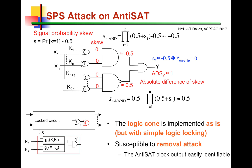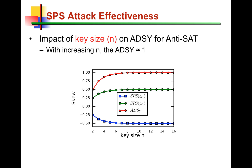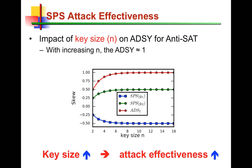Those remaining locking mechanisms can be broken by SAT attacks or sensitization attacks. So after removing the anti-SAT block, a SAT attack or sensitization attack may be launched on the remaining circuit, and the remaining locking mechanism can also be broken — that's how the anti-SAT defense is broken. We also observe that as the key size increases, as long as we have a very small or very large onset, the absolute difference between the two oppositely skewed signals will further increase, making it easier to identify the output of the anti-SAT block. For larger key sizes, the signal probability skew (SPS) attack is expected to be even more effective.